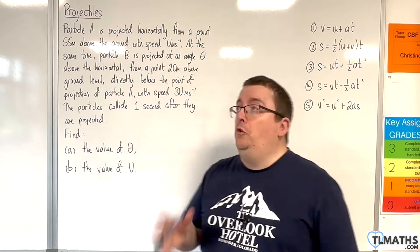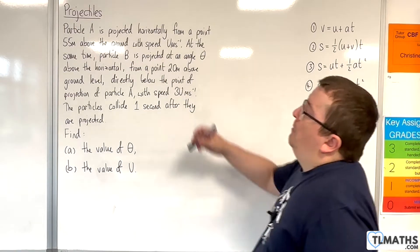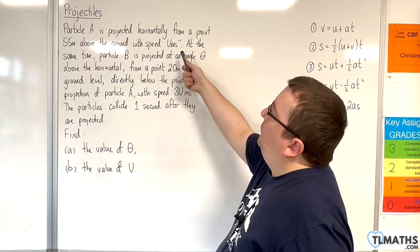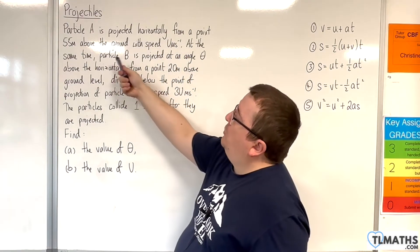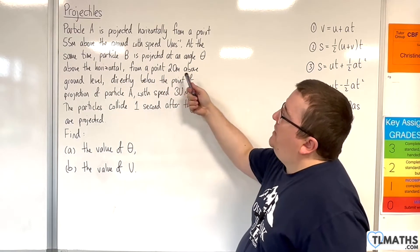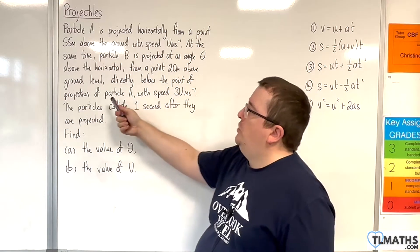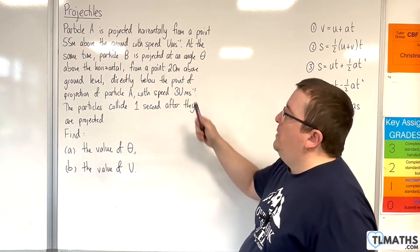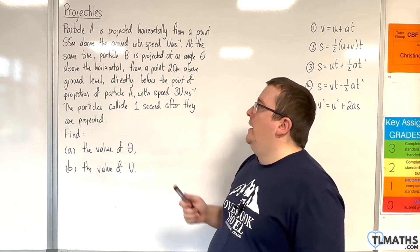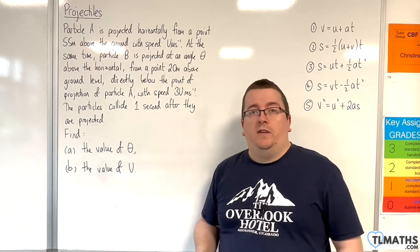In this problem, we have two particles. Particle A is projected horizontally from a point 55 metres above the ground with speed u metres per second. At the same time, particle B is projected at an angle theta above the horizontal from a point 20 metres above ground level, directly below the point of projection of particle A, with speed 3u metres per second. The particles collide one second after they are projected. Find the value of theta and the value of u.